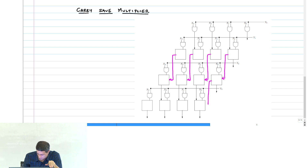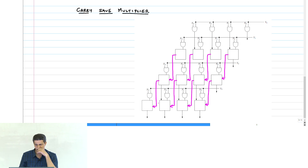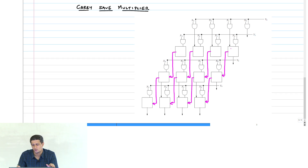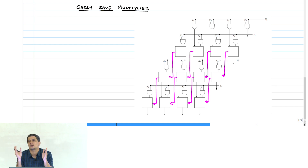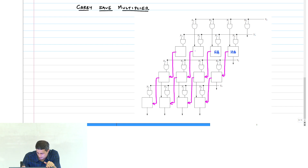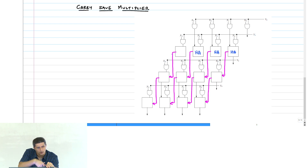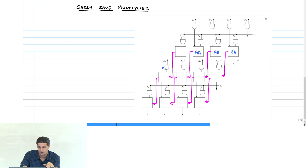Let us start filling out what should be the half adder and full adder arrangement. The first row consists of only half adders, because we are only adding the partial products — the two AND terms. The last one is also a half adder; you can even bypass it and add it to the next bit, but we will keep it as a half adder for now and ground the other input.